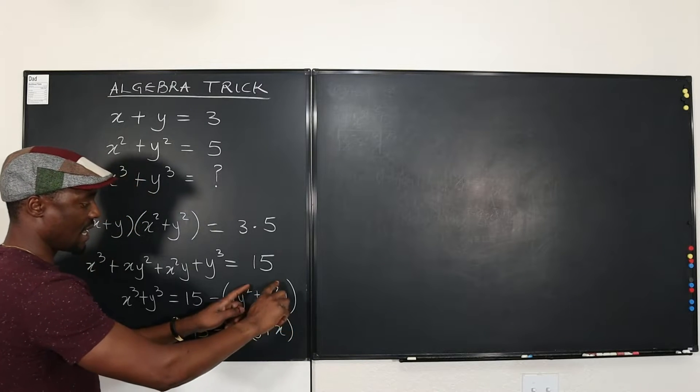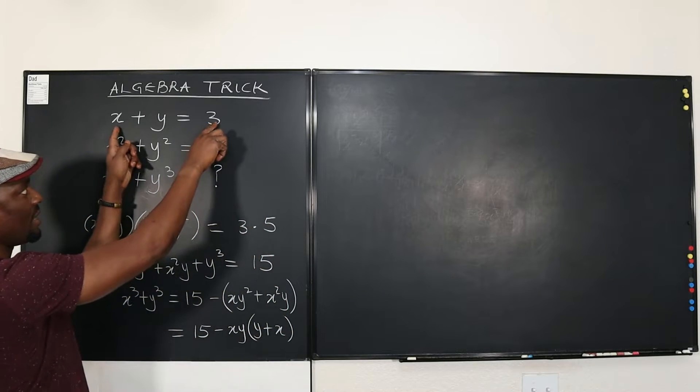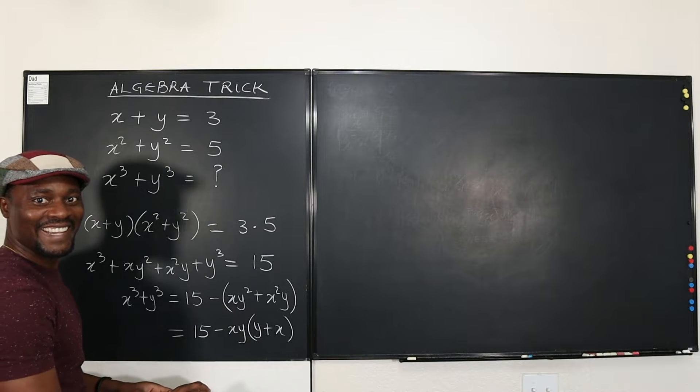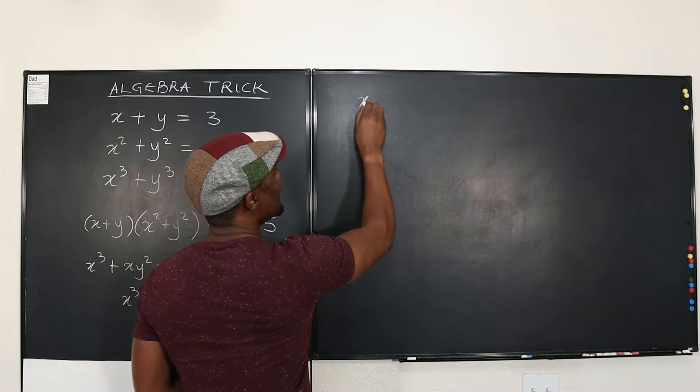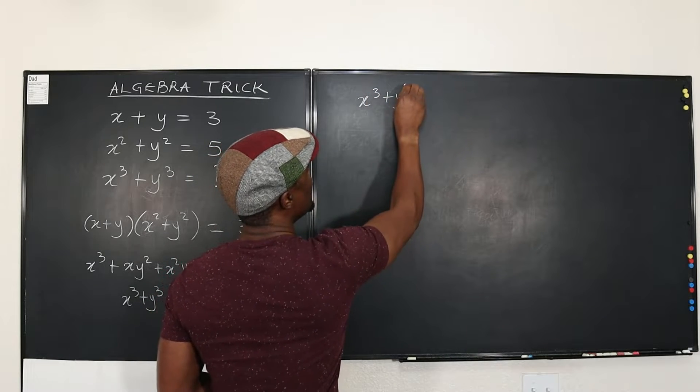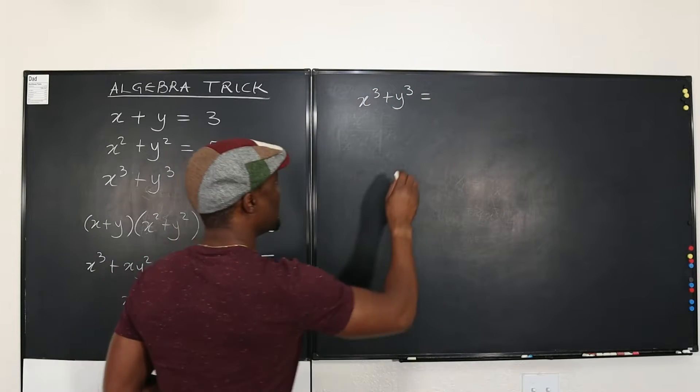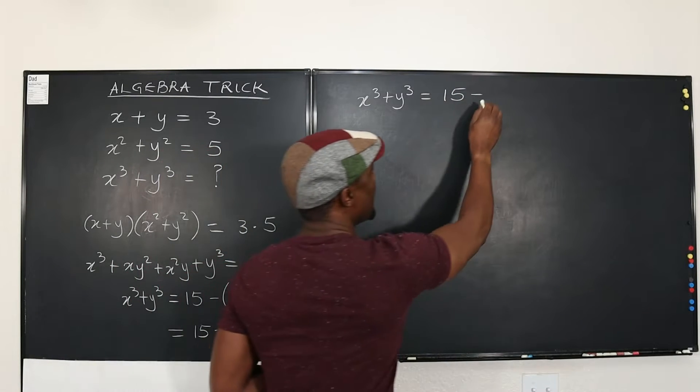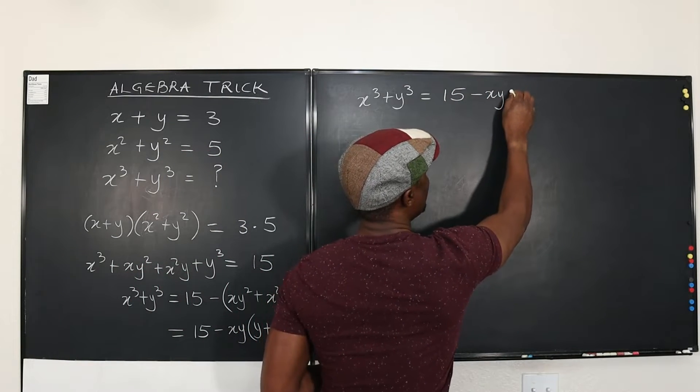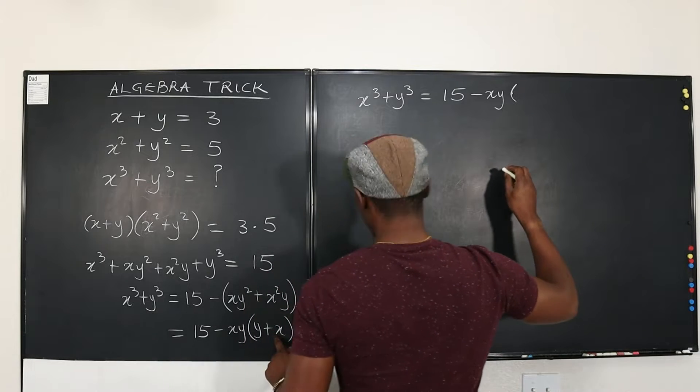I think I've seen X + Y somewhere today. It's three. Okay, it's beginning to look easy. So I know that X³ + Y³ is equal to 15 minus XY multiplied by